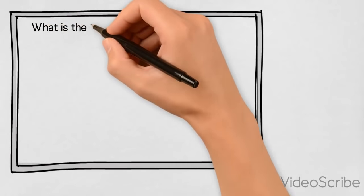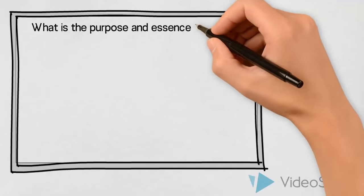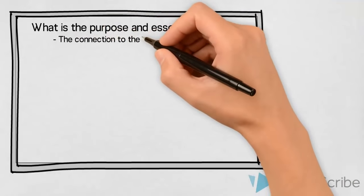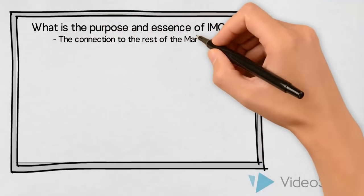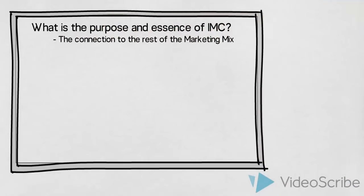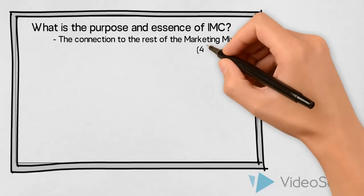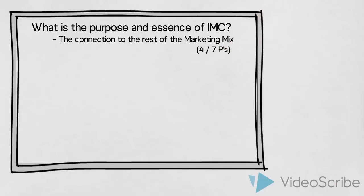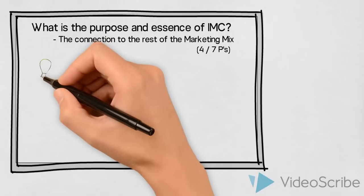What is the purpose and essence of an integrated marketing campaign and what is the connection to the rest of the marketing mix? When you are asked to design the marketing mix, you need to make decisions on four or seven core elements, also known as the four or the seven P's.